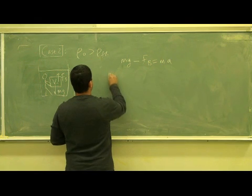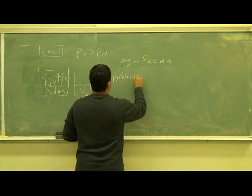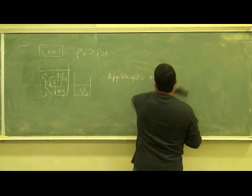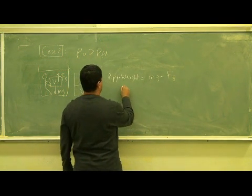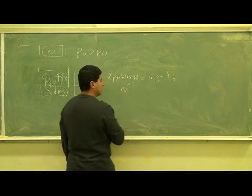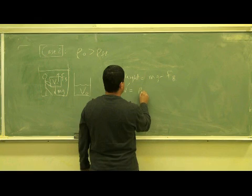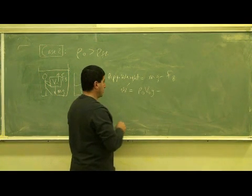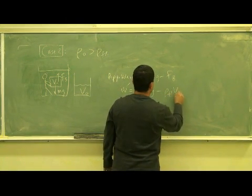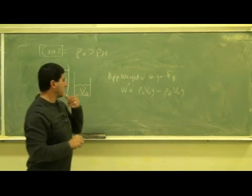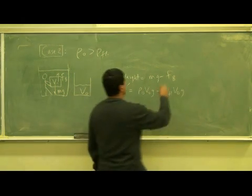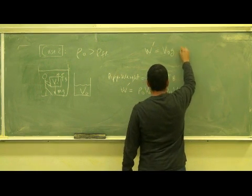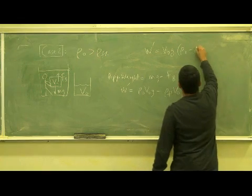So we can call that apparent weight is equal to Mg minus Fb. So that's equal to, we can call that weight prime. And then it's equal to density of the object times volume of object times G minus density of the buoyant force is equal to density of the fluid, volume of object times G. So you basically have the apparent weight is going to be V0g times density of the fluid.